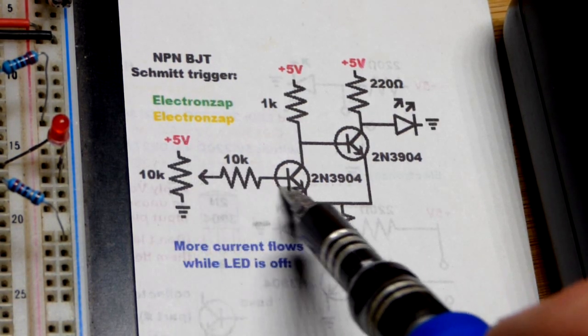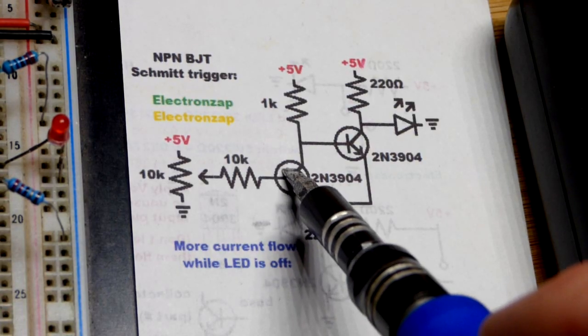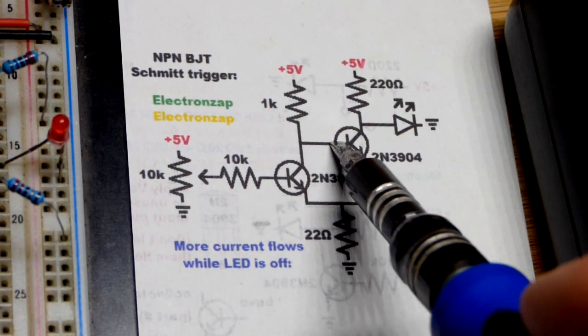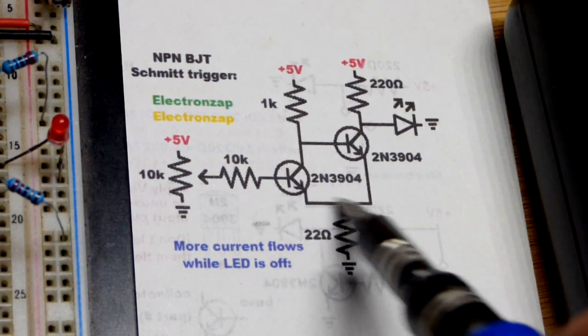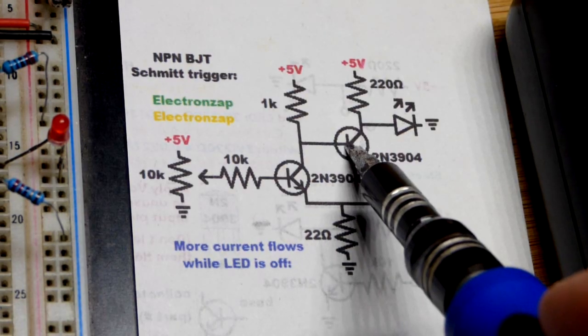But in any case, we go up to 5 volts, a little bit of current's going to flow that way, right there, which is going to turn this transistor on, connecting to ground there. Whatever current goes here will just get sucked to ground. So this voltage gets dropped to almost zero, turning this one off.